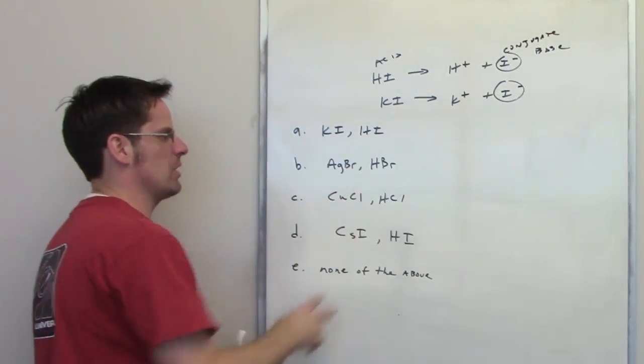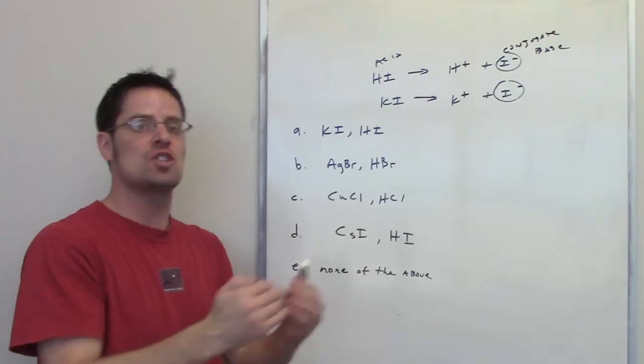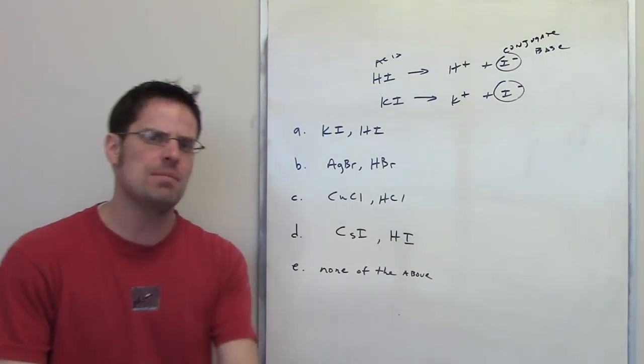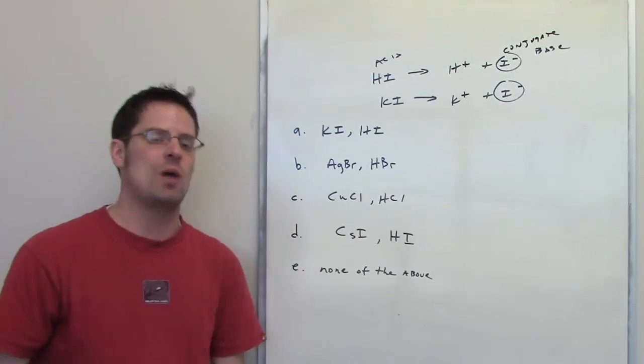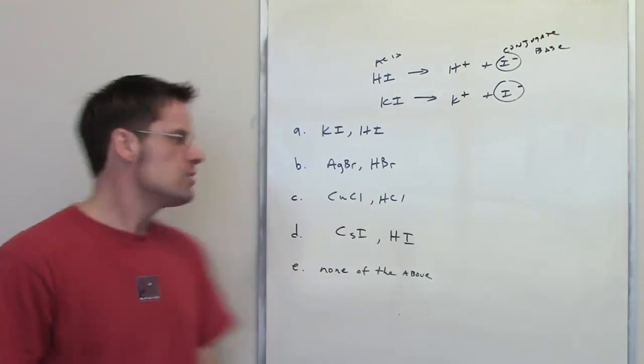As you scroll down here, you'll see that every one of these pairs is an acid and a source of its conjugate base. That is true. But which of them is a buffer pair? Remember that in order to be a buffer, you have to have a weak acid and a source of its conjugate base, not just any acid.